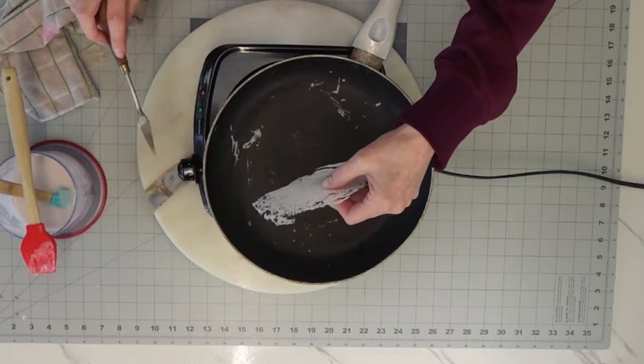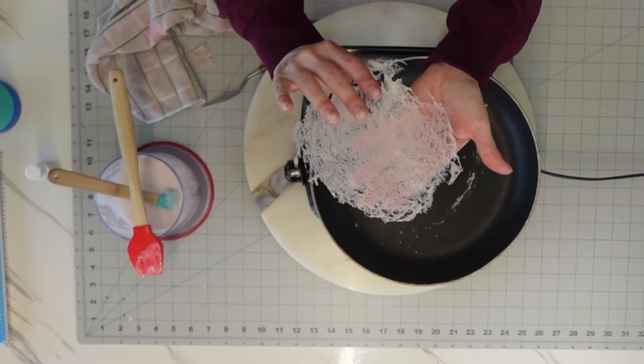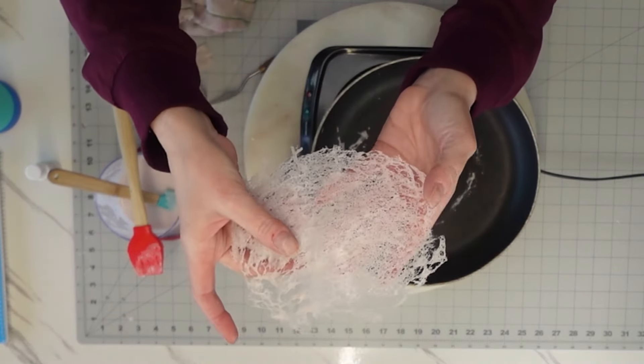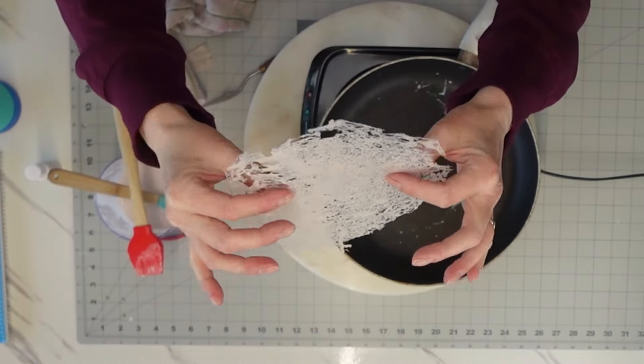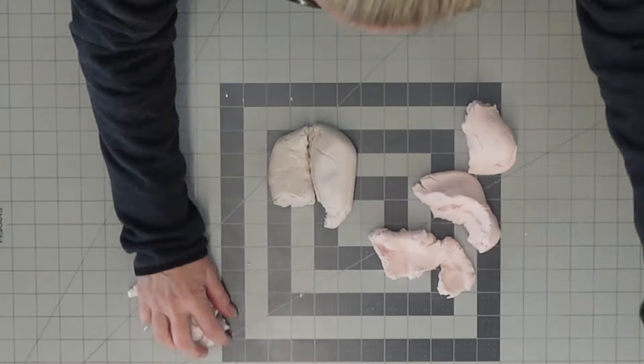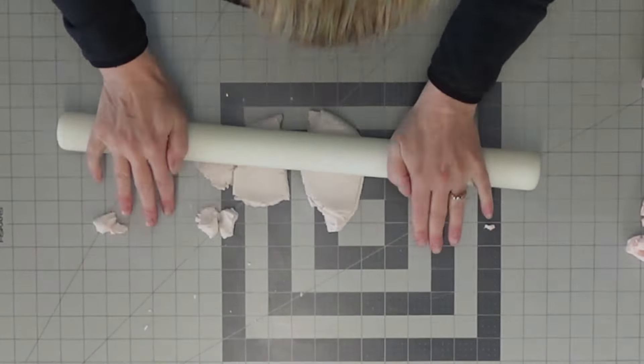And then you just lift it gently from your pan. And there you have your lace or your edible crinoline, depending on what you want to call it. I've heard it called both.